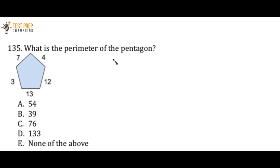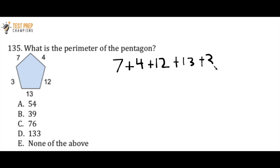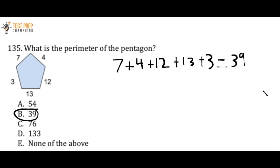For a question like this, all you want to do to find the perimeter is take all the numbers and add them all up. So we would do 7 plus 4 plus 12 plus 13 plus 3. Calculators are fair game here, and if we do it in our calculator we see that the answer is B, 39. I don't have a written solution for this question because hopefully this is pretty straightforward. Whenever you're ready we'll go ahead to the next question.